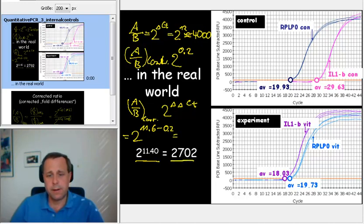And if you calculate that, the correct induction is something like 2,700. That's the induction that we now obtained with the delta delta CT method, and that's the first real-world application that you have done.